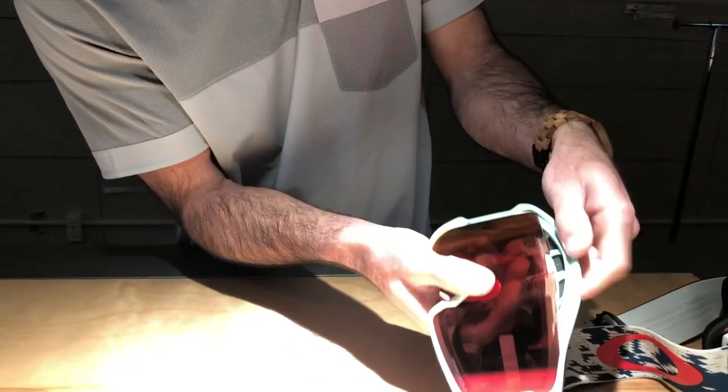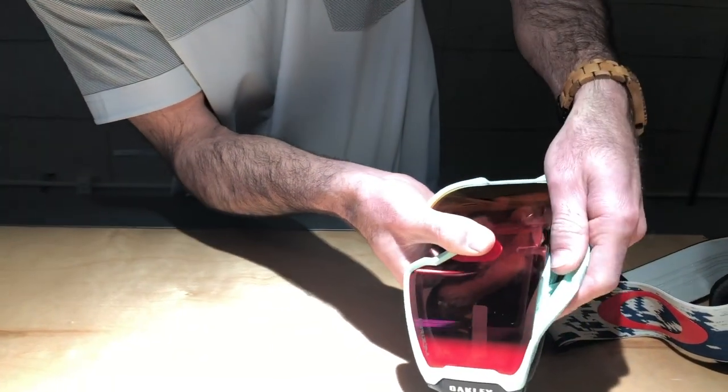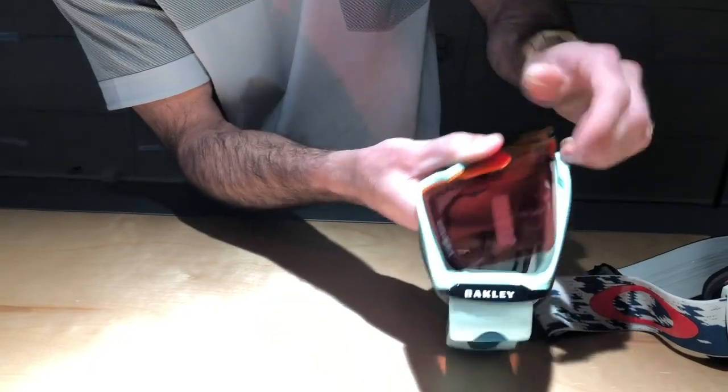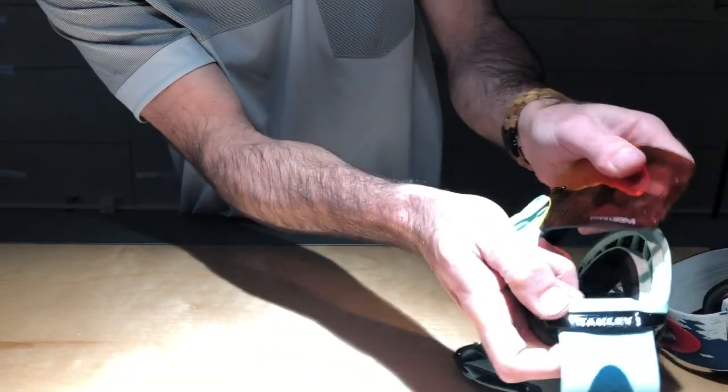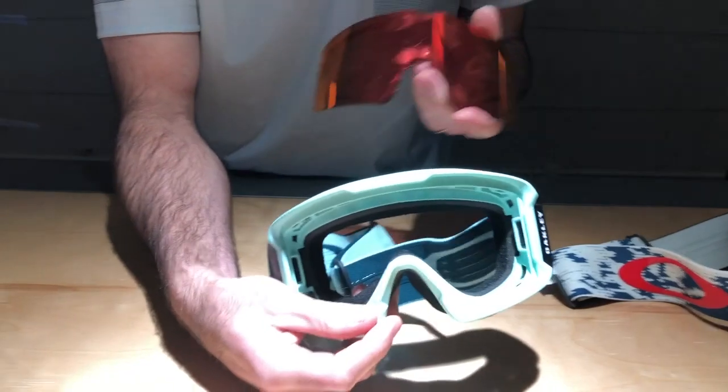You see these two little clips? Start from there and then you just peel it back on the sides. One little clip there in the nose pops right out. So you have your chassis and your frame, you have your lens.